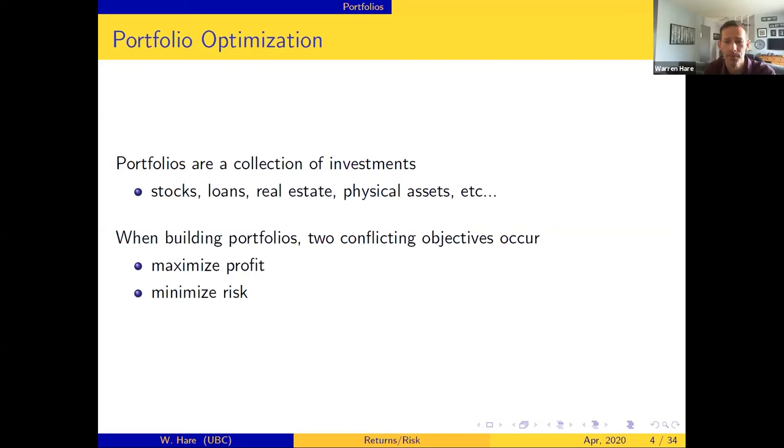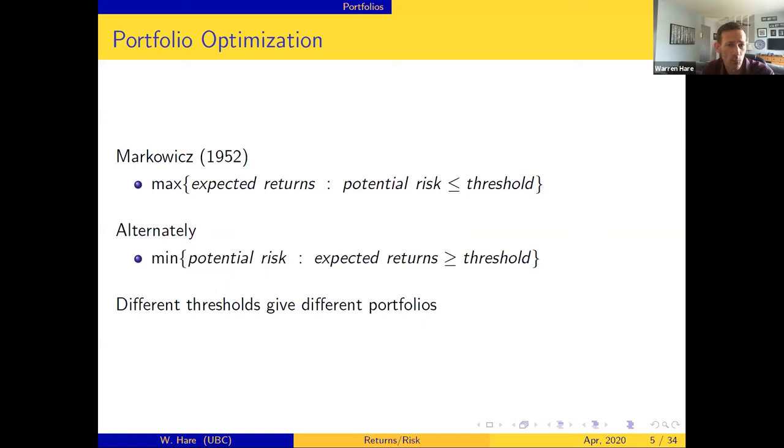This is in essence what portfolio optimization tries to do - it tries to use mathematics to model how do we get the best collection to maximize profit and minimize risk. This dates back to the 50s. Markowitz presented the first model in 1952 where he said what you should do is pick some threshold for your risk and then just maximize your expected returns so that your potential risk is below that threshold. Straightforward approach.